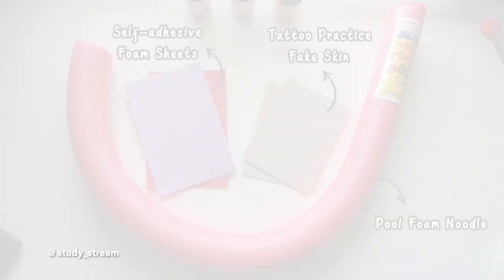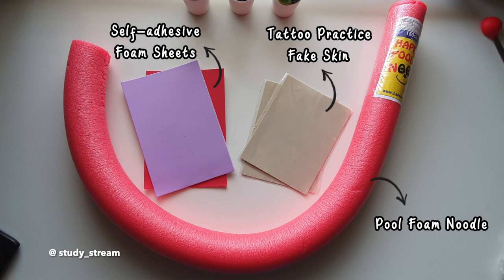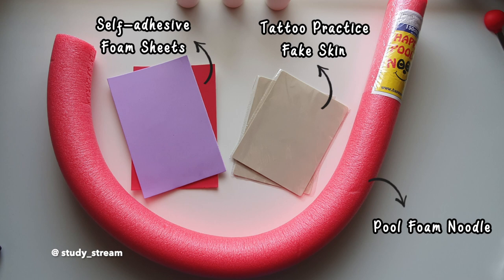Some of the other supplies you will need are self-adhesive foam sheets. They can be any color you like and the size depends on how large you want your model to be. Mine are 8.7 by 5.9 inches. Tattoo practice fake skin made out of silicone. This material is similar to human skin but can be covered with faux fur for an animal model.